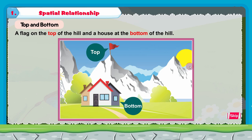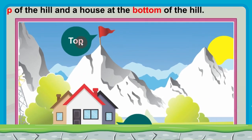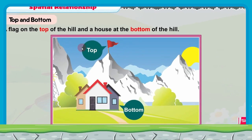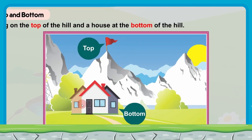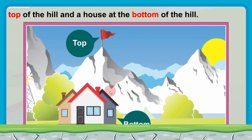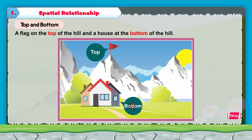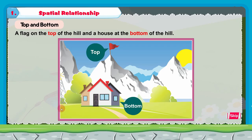If you see this picture, you can find a flag, a hill, and a house. If you take the hill, we have a flag on top — T-O-P top. This is the top part and we have a flag here. And this is the bottom part of the hill and we have a house at the bottom — B-O-T-T-O-M bottom. Let's read the sentence here: a flag on the top of the hill and a house at the bottom of the hill.